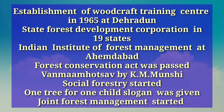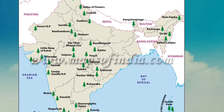India has various national parks, wildlife sanctuaries, bird sanctuaries and biosphere reserves. The four biosphere reserves that are part of the World Network of Biosphere Reserves are Sundarbans in West Bengal, Nanda Devi in Uttarakhand, Gulf of Mannar in Tamil Nadu, and Nilgiri in Kerala, Karnataka and Tamil Nadu.